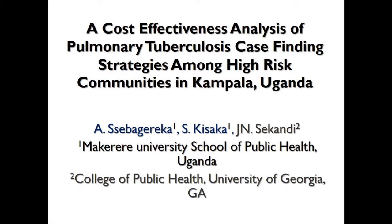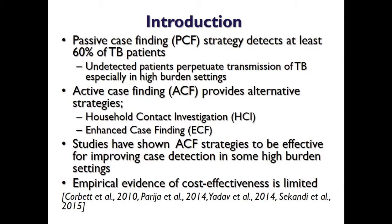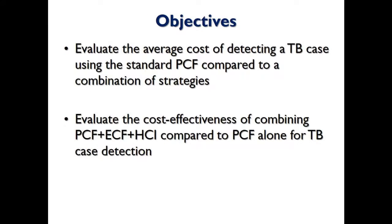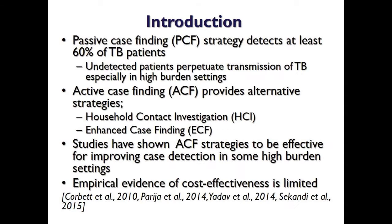Thank you for this opportunity to speak. My talk is on the cost-effectiveness of pulmonary TB case finding among high-risk communities in Kampala. Passive case finding has been documented to detect about 60% of cases in most countries, meaning about 40% remain undetected. These undetected cases are the ones perpetuating TB transmission in communities, especially in high-burden countries.